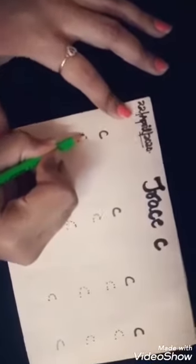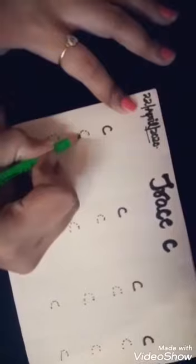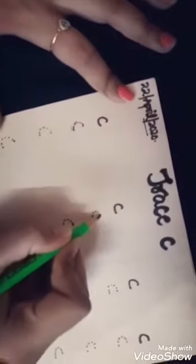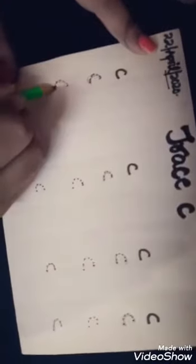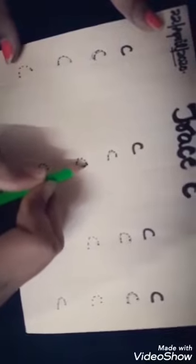We need to trace with the pencil the small letter C on the corresponding dots. We need to move our pencil on the dots, which will make a perfect C. See, I am making in this manner. One more time. Now we are coming in this line. Your mama will make dots for you and you have to trace it very perfectly, which will make perfect C.